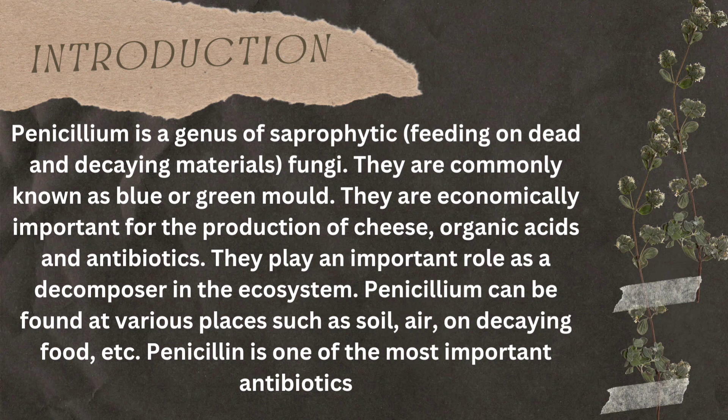Let's talk about the introduction. Penicillium is a saprophytic fungi, which means it lives on dead and decaying material. It is commonly known as blue and green mold, because it appears bluish and greenish in color. They are economically important for the production of cheese, organic acids and antibiotics. They also play an important role as a decomposer in the ecosystem, breaking down organic material.